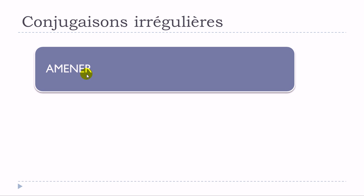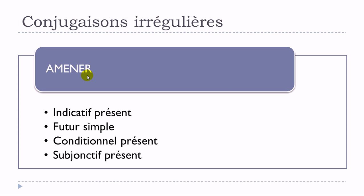I've been taking the verb Amener — Amener means to bring someone. We'll see that the tenses that will have these slight changes will be l'indicatif présent, le futur simple, le conditionnel présent, and le subjonctif présent. For all the other tenses, this verb Amener will just behave like a normal verb from the first group, following the same rules of construction.